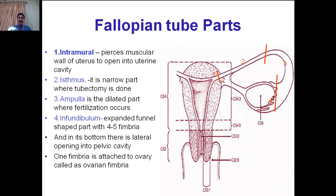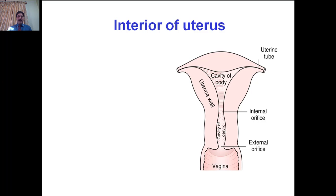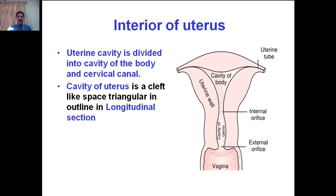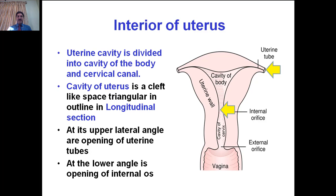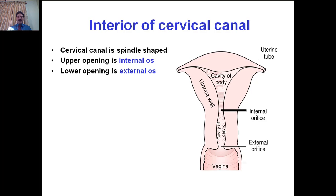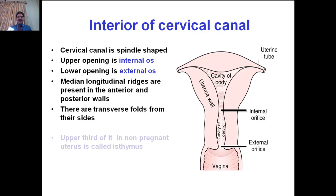The interior of the uterus is divided into the cavity of the body and the cervical canal. The uterine cavity is a cleft-like space, triangular in outline in longitudinal section. At the upper lateral angles are the openings of the uterine tubes; at the lower angle is the opening of the internal os. The cervical canal is spindle-shaped: the upper opening is the internal os and the lower opening is the external os. Between these lies the cervical canal with median longitudinal ridges on the anterior and posterior walls and transverse folds. The upper third of the cervical canal in the non-pregnant uterus is called the isthmus; it undergoes menstrual changes and forms the lower uterine segment in pregnancy.